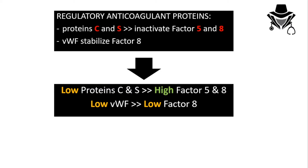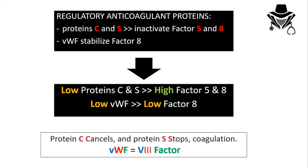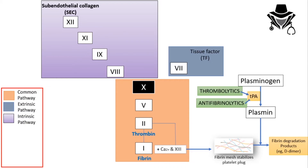Here's a mnemonic: protein C Cancels and protein S Stops the coagulation, because they inactivate factors 8 and 5. Von Willebrand factor is the Protector of factor 8 — notice the similarity: V and W resemble the shape of the number 8, and F stands for factor. Proteins C and S regulate factor 5, and along with von Willebrand factor, they regulate factor 8.